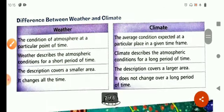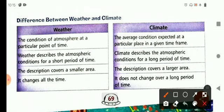Now let's read the difference between weather and climate. Weather is the condition of atmosphere at a particular point of time. It may prevail, it may change from time to time, as we have just now read.